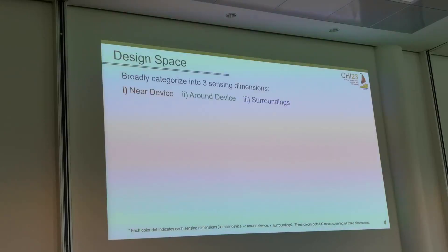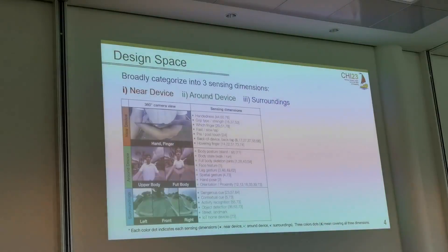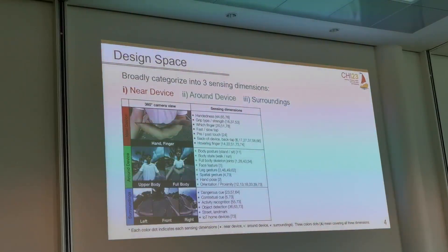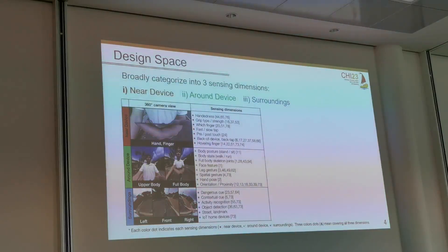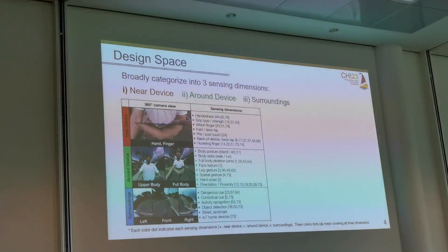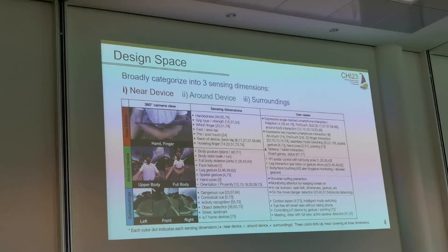Therefore, our target in this paper is to explore the potential use cases and applications that leverage these omnidirectional sensing capabilities. We broadly categorize the design space of sensing into three dimensions based on the distance from the camera: near device, around device, and surroundings of the device. Each sensing dimension can be further divided into different tasks, such as detecting different handedness or finger posture in the near-device scenario, detecting body posture or spatial gesture in the around-device scenario, and extracting information from surroundings for activity recognition or IoT home devices. There are more detailed use cases, but I will come back to explain each application later.